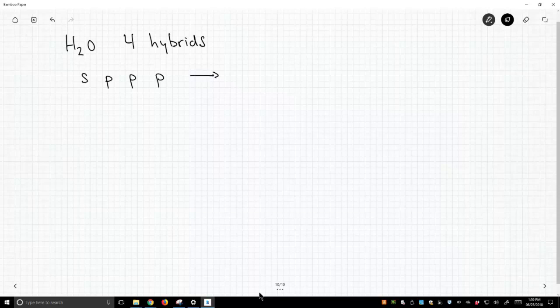And if we need to make four hybrids, we're going to have to mix our S with three additional p orbitals. So we've got to use everything at our disposal. And that gives us four sp3 hybrids, sp3 hybrids because they're one part s and three part p, sp3.